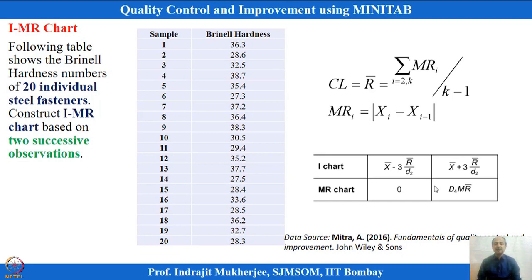When single sample observations are collected, we need to decide what type of control chart to implement to figure out whether the process is going out of control or is in control. In such scenarios, we also have to remember that data may have autocorrelation — the first observation and second time point observation can be interrelated with each other. One available option is individual moving range (IMR) charts.